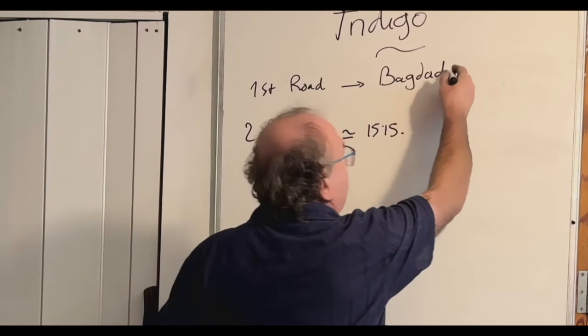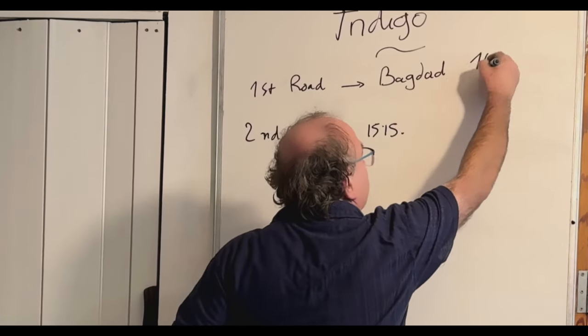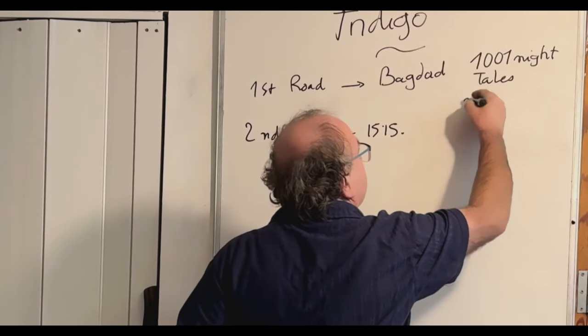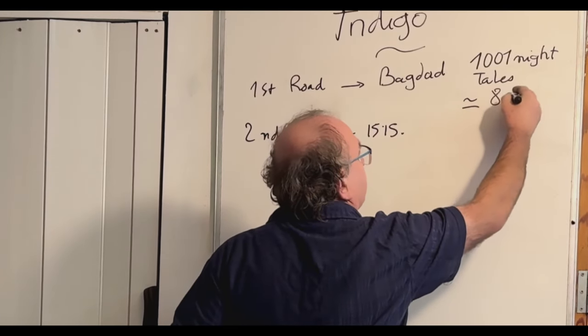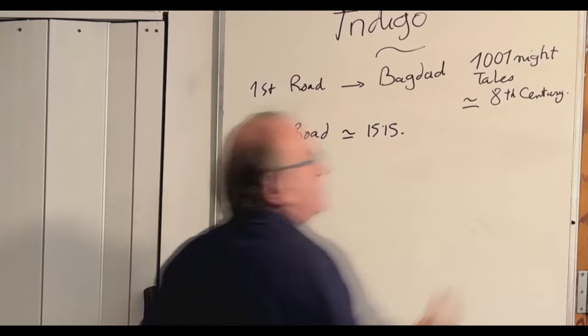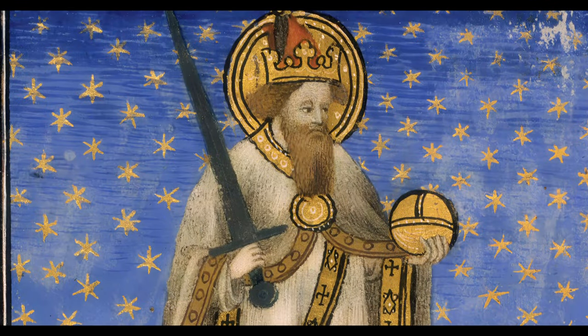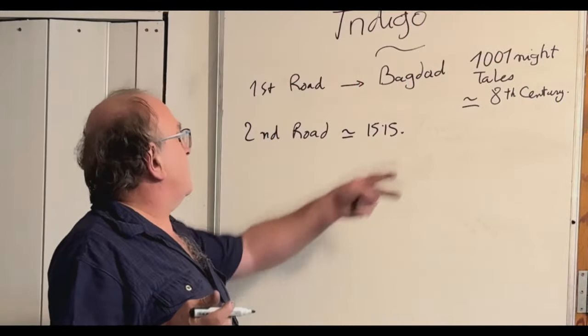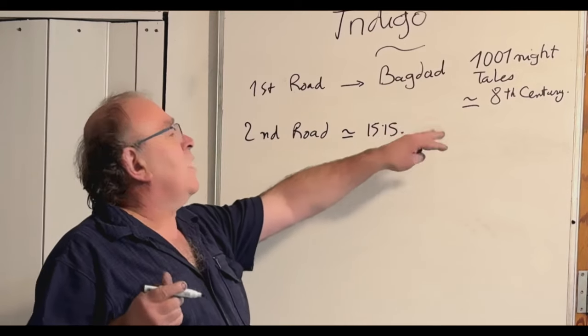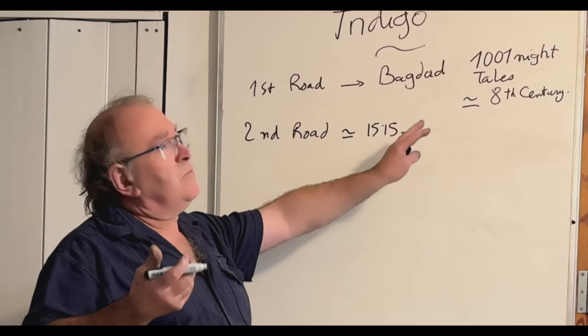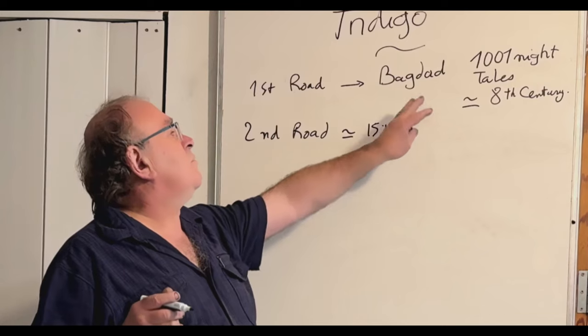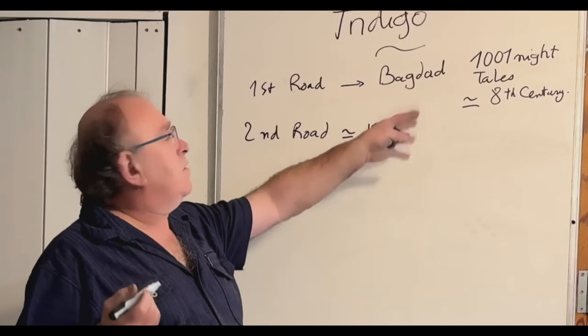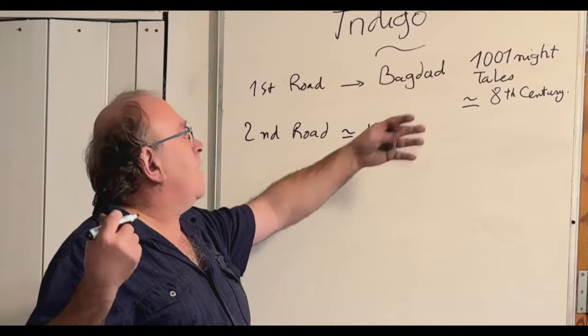This is very renowned, so the one thousand night tales, it is around the 8th century. In Europe, it is the period of Charlemagne, Carolus Magnus, the emperor of Europe before Europe was created, but a kind of similar. So that's an old road, and we have some documents that show that it was also from the antiquity, Egyptian antiquity, going to Roma.